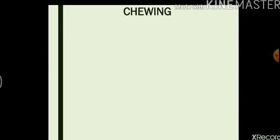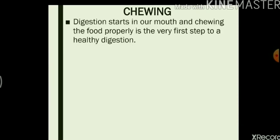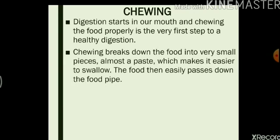Now we will read about some more factors that are important in the process of digestion, for example chewing. Digestion starts in our mouth and chewing the food properly is the very first step to a healthy digestion. Chewing food breaks down the food into very small pieces, almost a paste, which makes it easier to swallow. The food then easily passes down the food pipe. You must have noticed that if you do not chew your food properly or if you swallow it before you have chewed it properly, it feels very difficult to swallow. Therefore chewing it properly before you swallow it is very important.